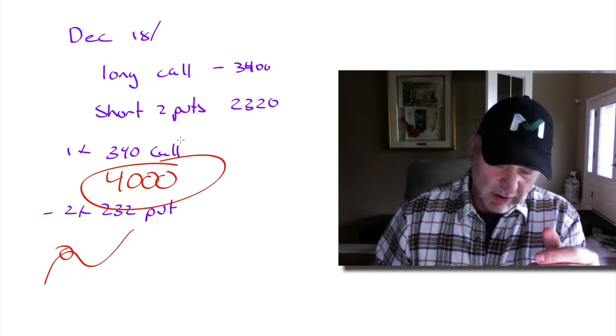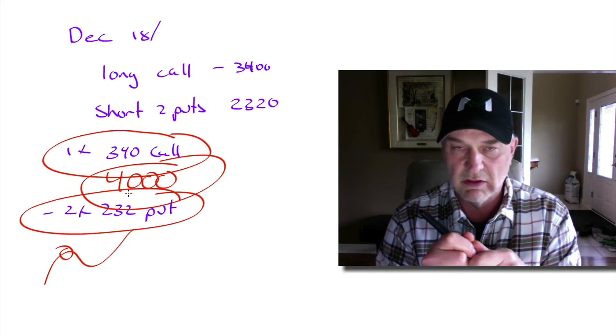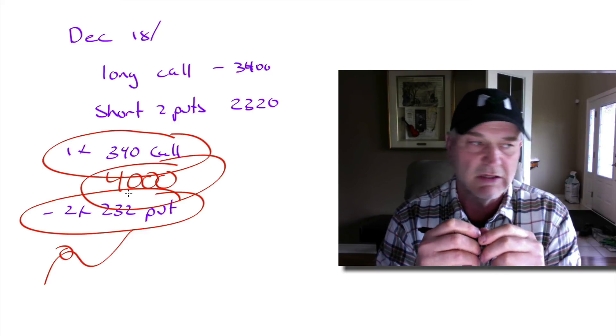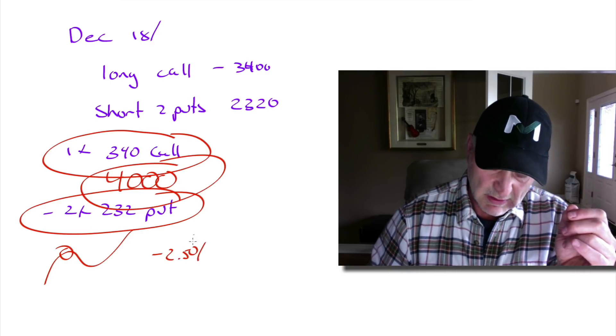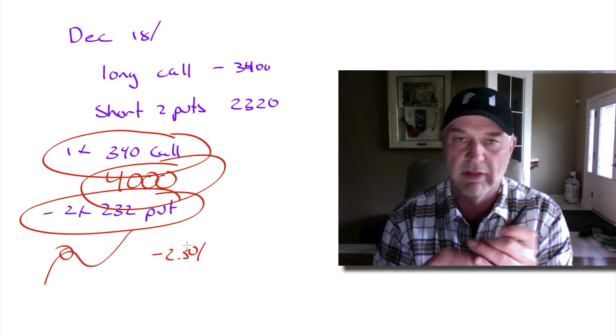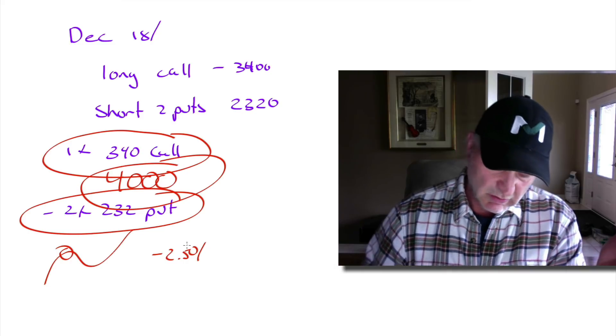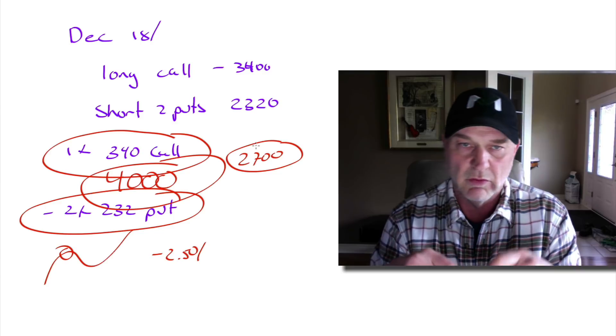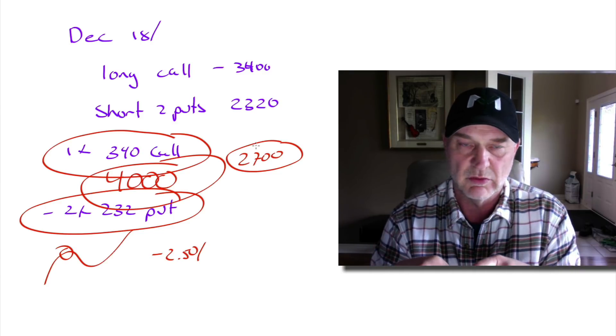There we go. One $340 call financed with two $232 puts. On Friday just before the market closed I could do that one for a negative cost. I think it was about negative $250, which means I would get paid $250 per combo that I did. The margin for each one is around $2,700. You'd need at least $2,700 in securities in your portfolio to act as margin against this position.